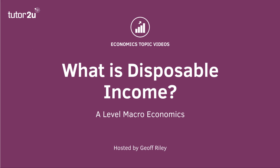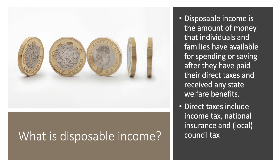Welcome to this macro video asking the question: what is disposable income? This is a key macro measure, particularly when we look at living standards. Disposable income is defined as the amount of money that individuals and families have available for spending or saving after they have paid their direct taxes and received any state welfare benefits. For this calculation, direct taxes include income tax, national insurance contributions, and local council tax.